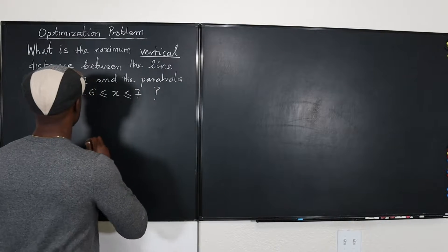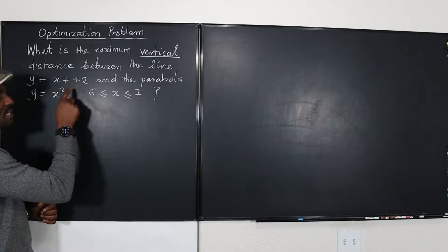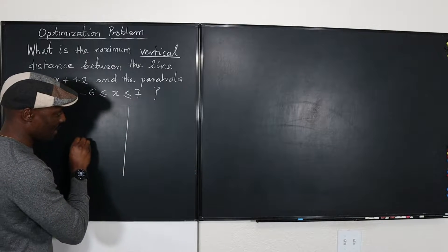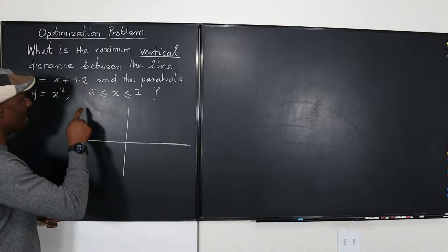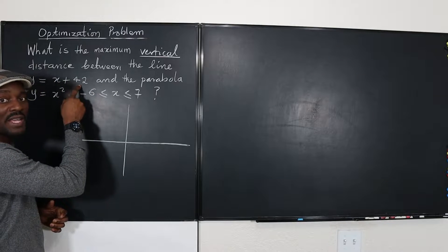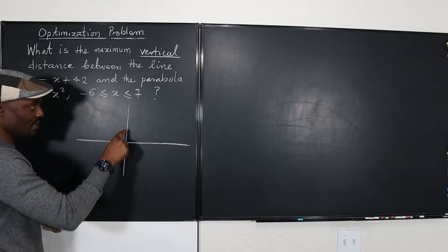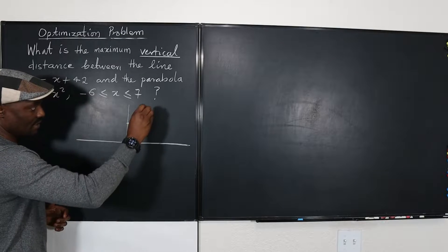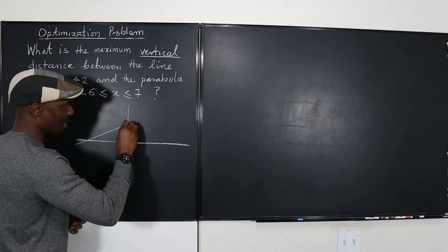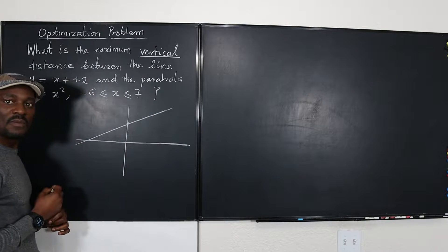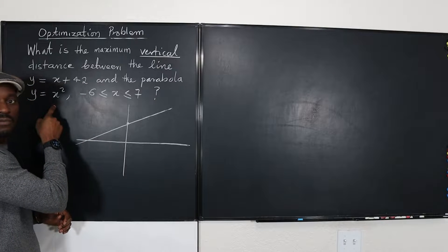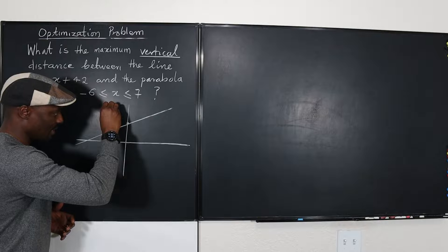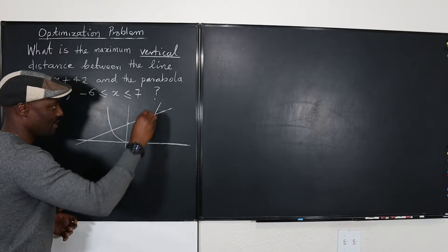The first one is y equals x plus 42, which means it's a straight line. It has a positive slope and the y-intercept is positive, so the y-intercept has to be somewhere high up — let's say this is the point where it's 42. Because it's a positive slope, I can draw it going up like this. Now the other graph is y equals x squared, which is just the parabola curve, something like this.